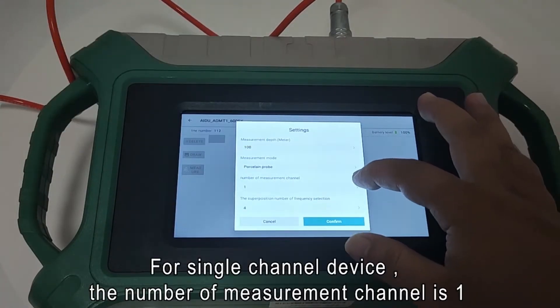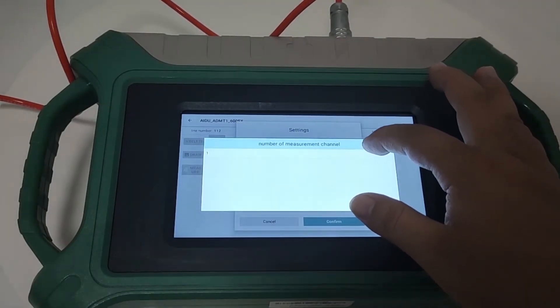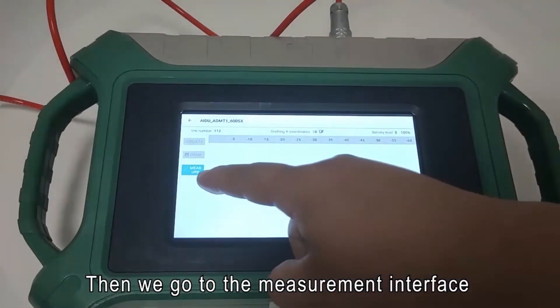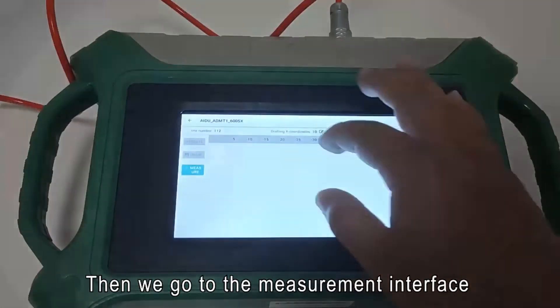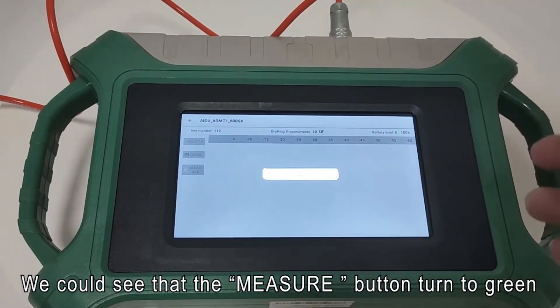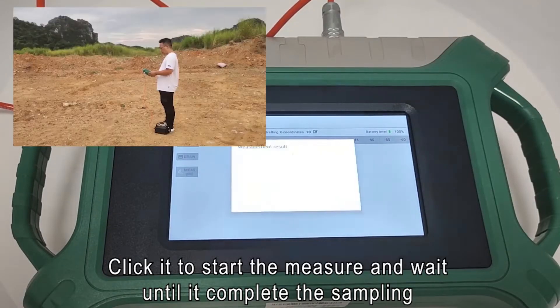For Single-Channel device, the number of measurement channel is 1. Then confirm the setting. Then we go to the measurement interface. We could see that the measure button turned to green. Click it to start the measure and wait until it completes the sampling work.